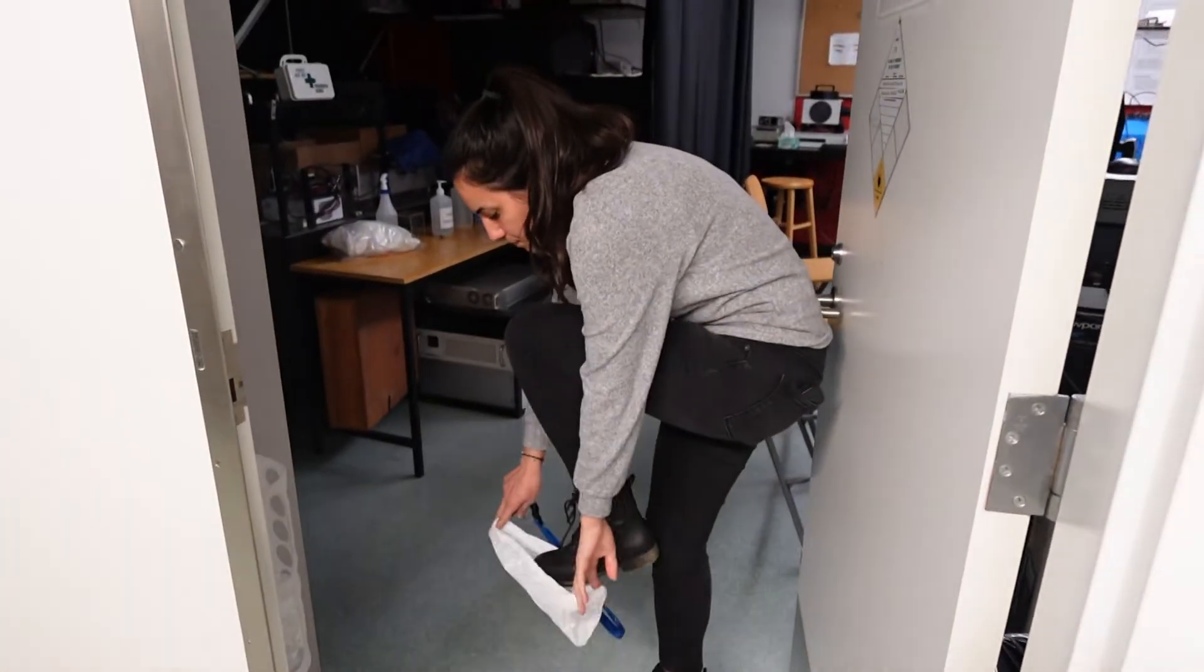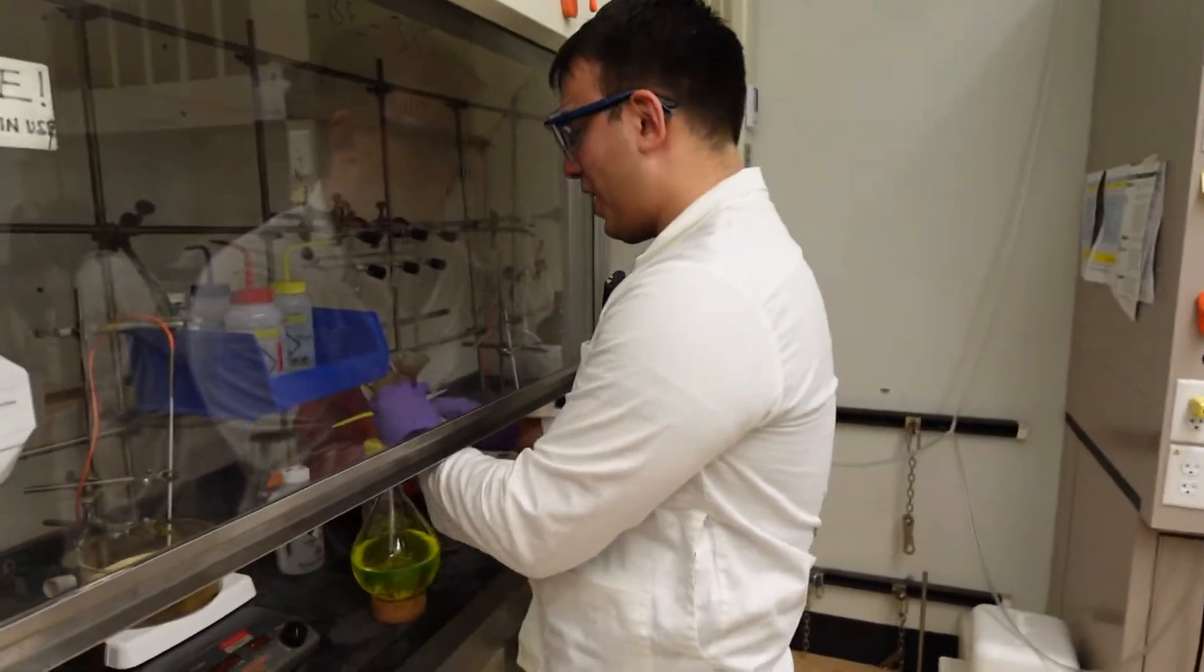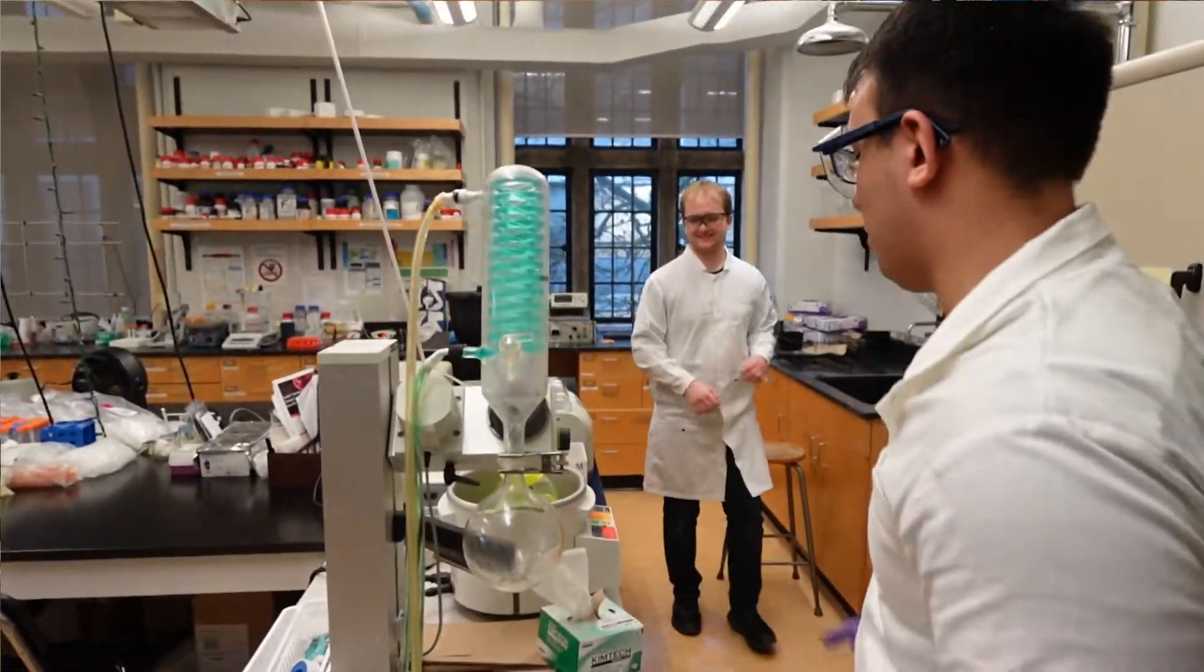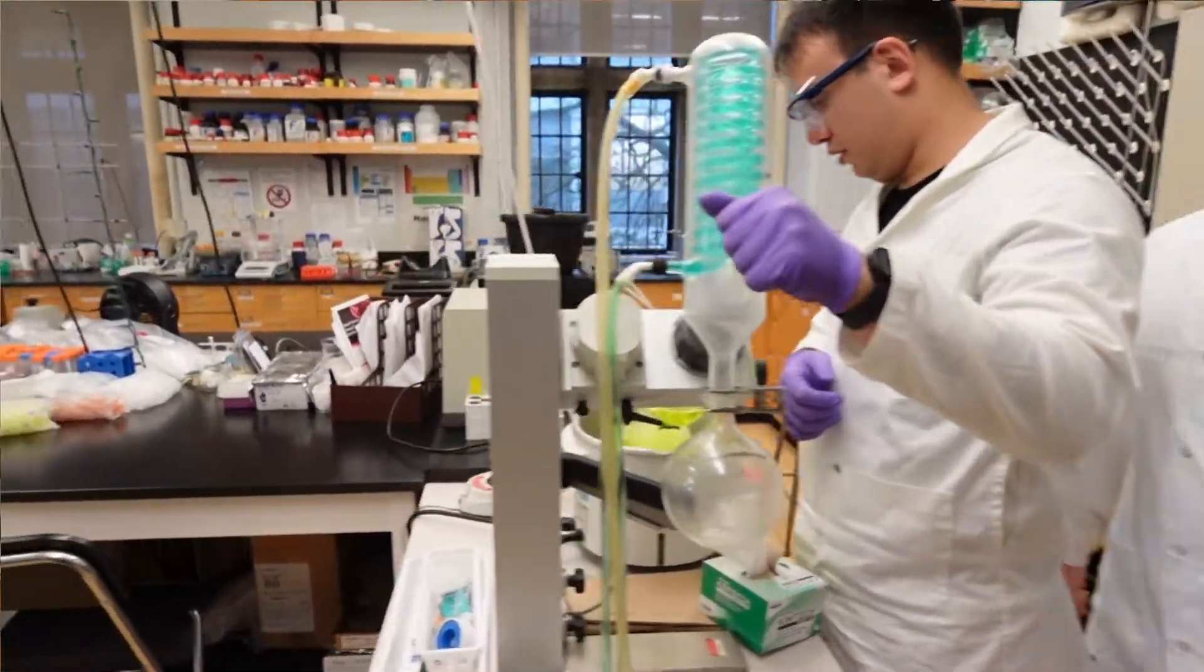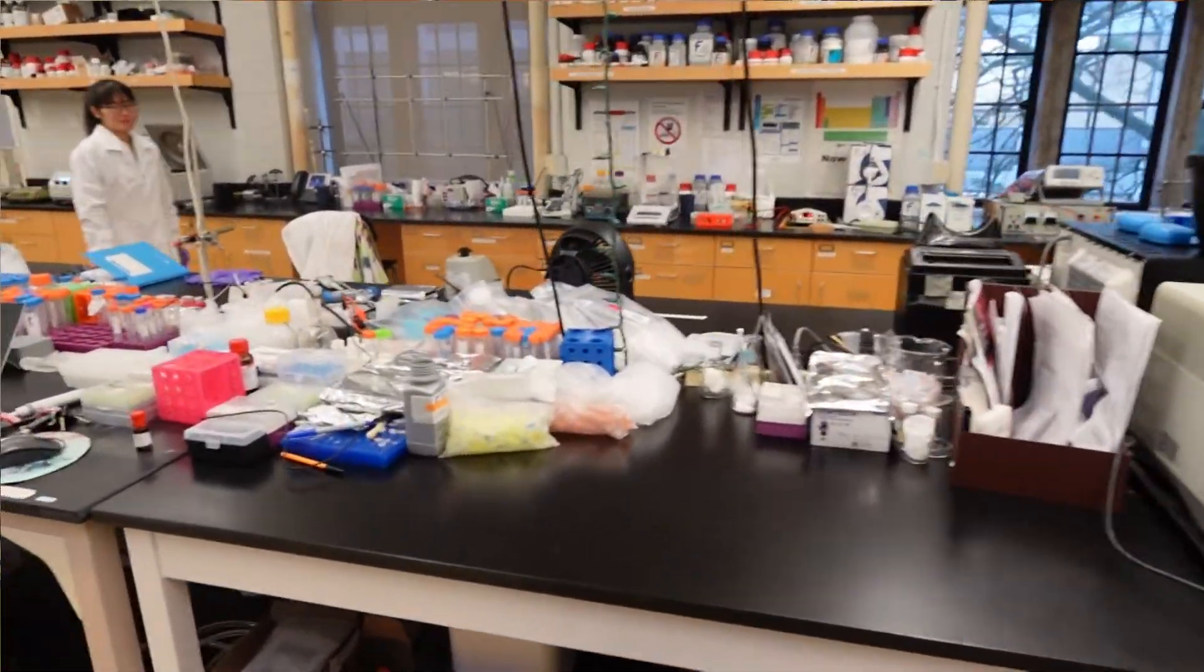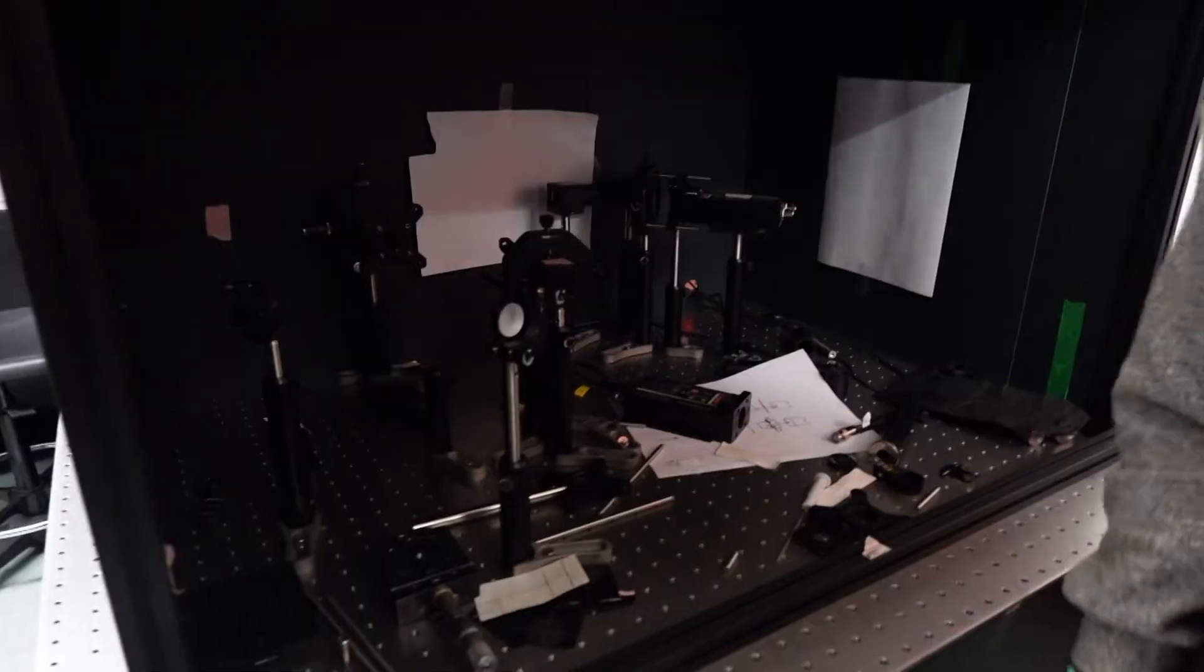So when thinking about what my team members do in the research lab, it's a few different things. If you walk into the lab, you're going to see people wearing lab coats and safety glasses sometimes, and they're going to be doing experiments, trying to make different materials with certain properties. They might be trying to build devices or prototypes that have certain functions.